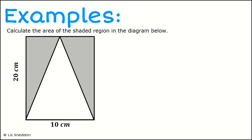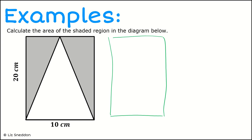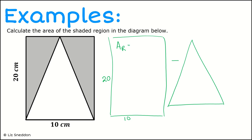Let's have a look at example number three. Here I want to find the shaded region. I'm going to find the area of the large rectangle first, then separately find the area of the triangle piece, and then subtract the two areas to find the shaded part. Starting with the rectangle: it is 20 centimetres by 10 centimetres. The area of the rectangle is base times height — 10 times 20 — giving an area of 200 centimetres squared.